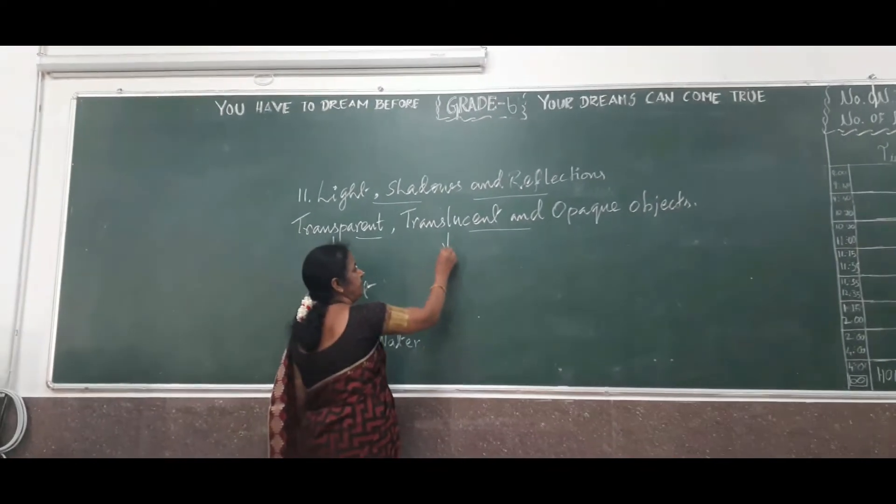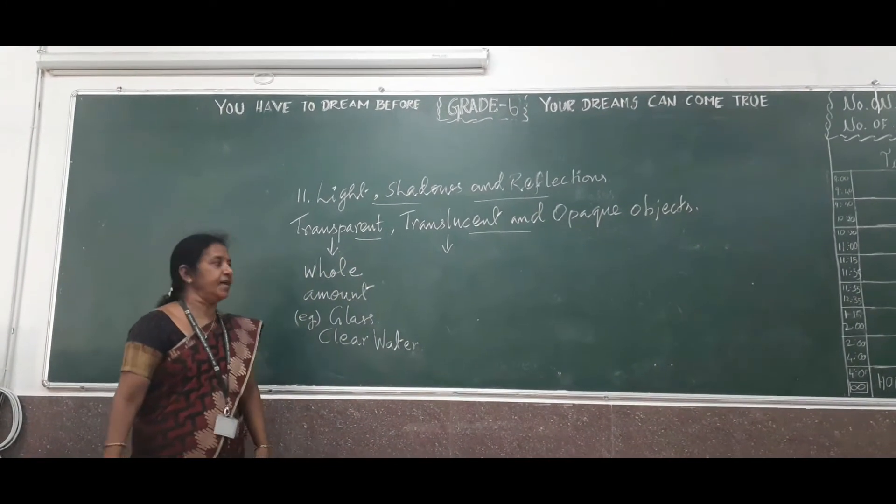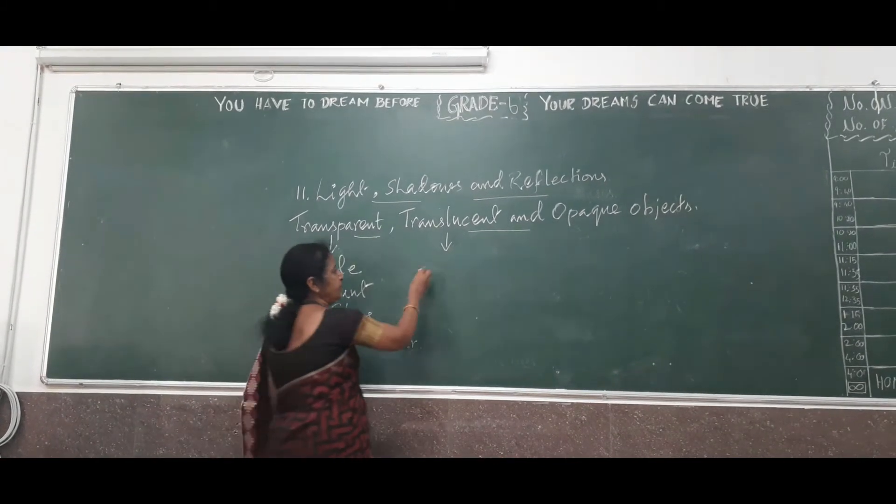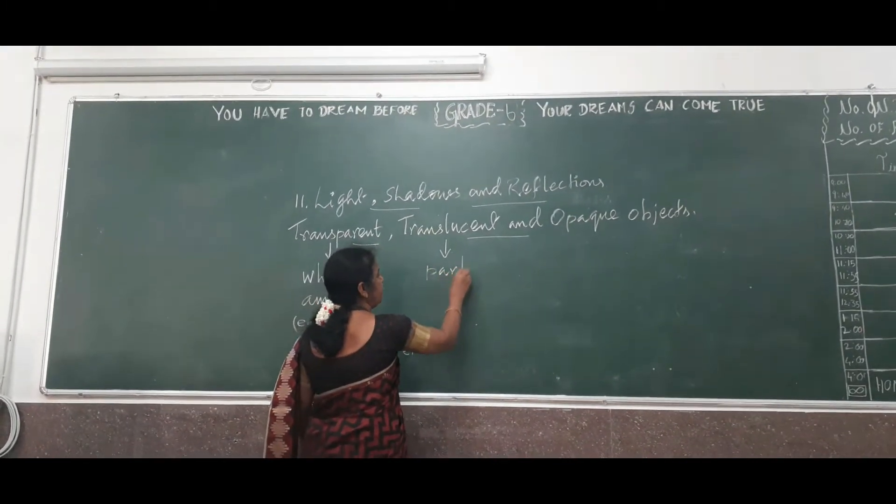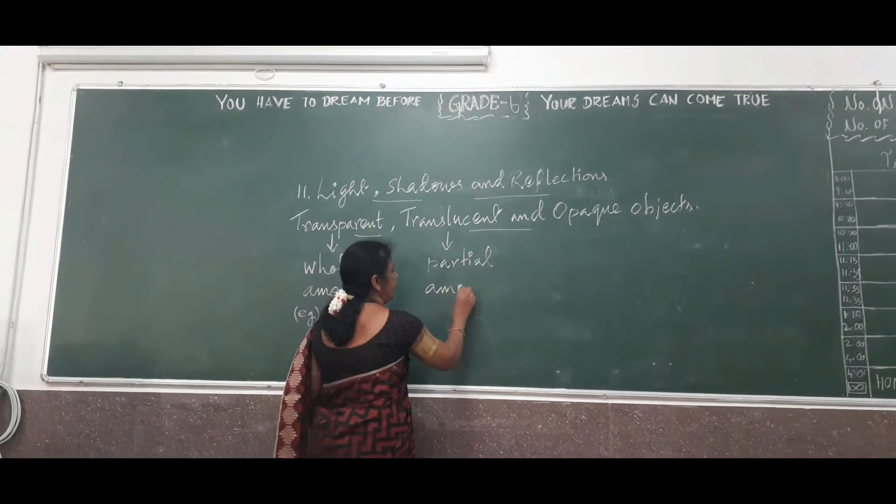Next, when we are considering the object is divided, next into translucent. What is meant by translucent? Here, the half, that is the part of amount of light, that is called the partial amount of light, it will be allowing. That is known as translucent.